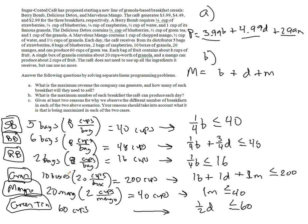Granola, 10 boxes, 20 cups per box. That can generate 200 cups. Mango, there are 20 mangoes at two cups per mango, so they can do 40 cups total. Green tea, there are 60 cups of green tea available per day.